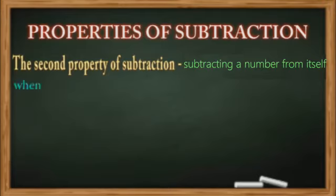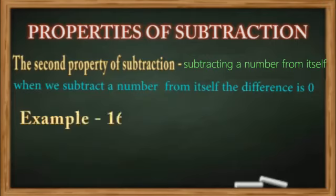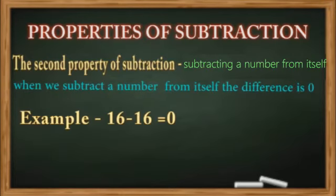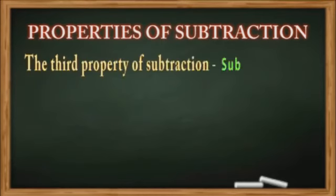The second property of subtraction is subtracting a number from itself: when we subtract a number from itself, the difference is zero. For example, if we subtract 16 from 16, we get the answer zero. This shows that if we subtract a number from itself, the difference is zero.